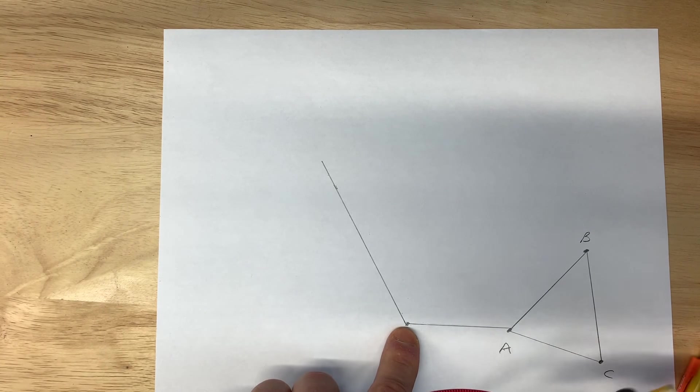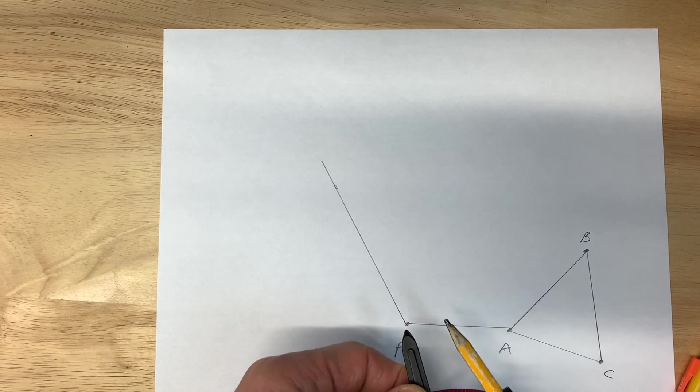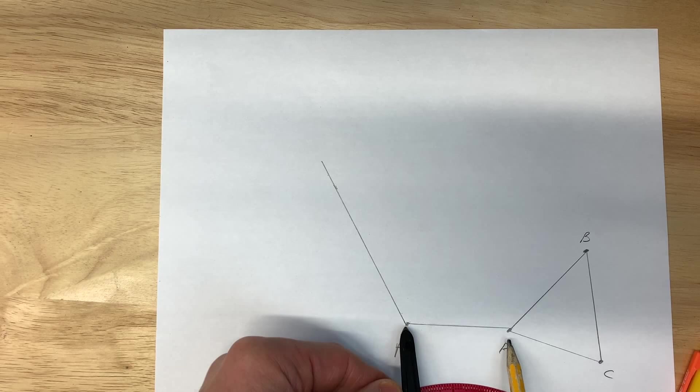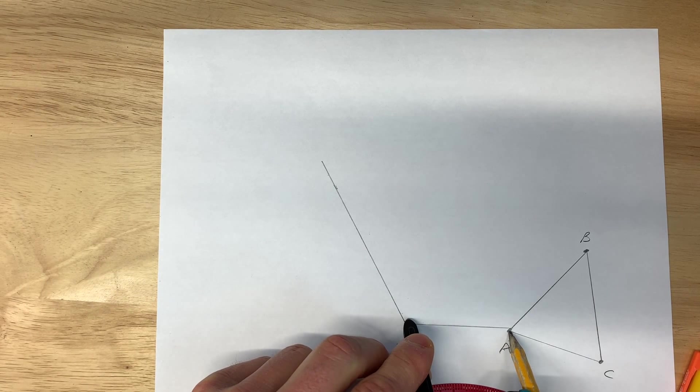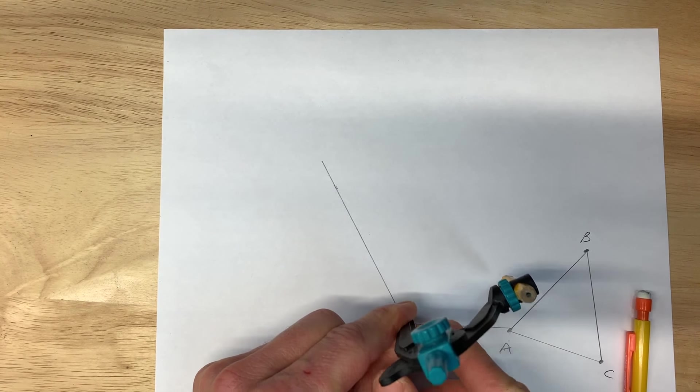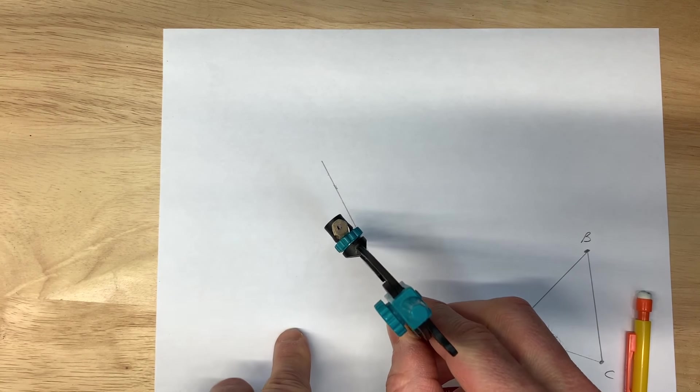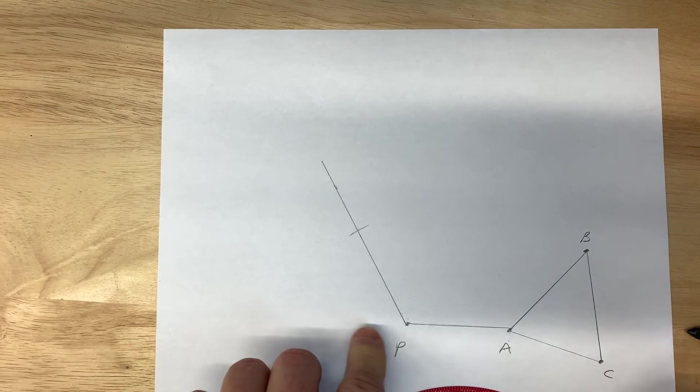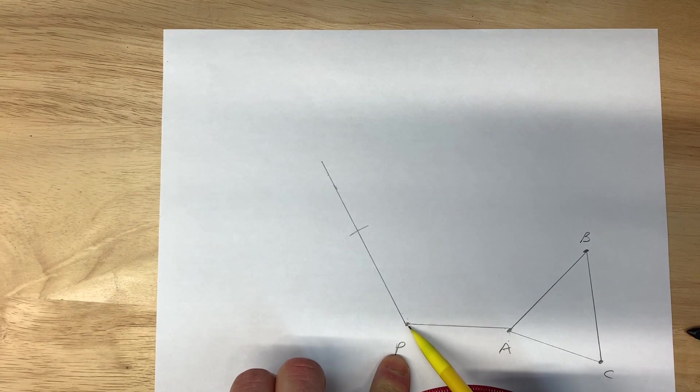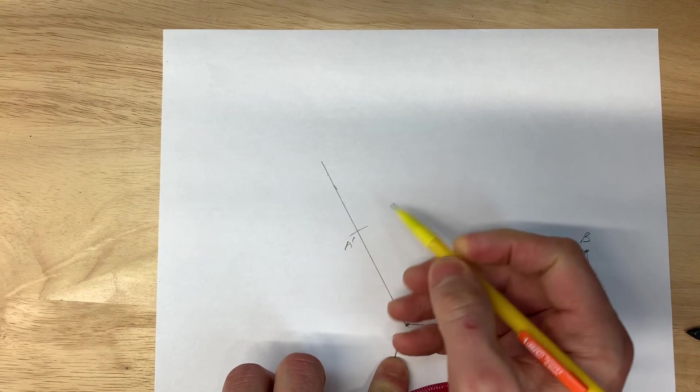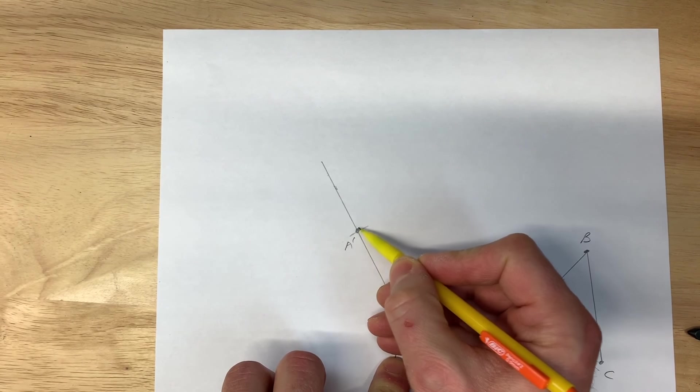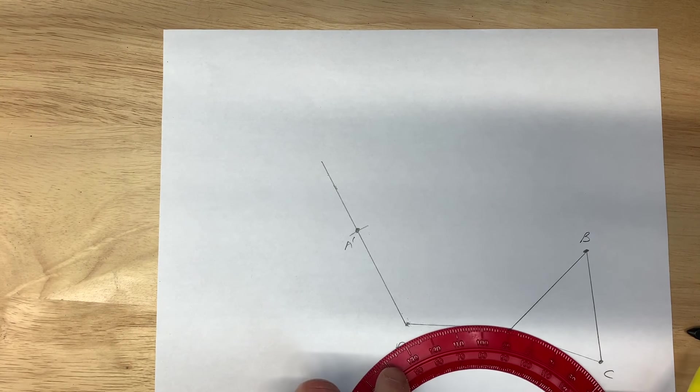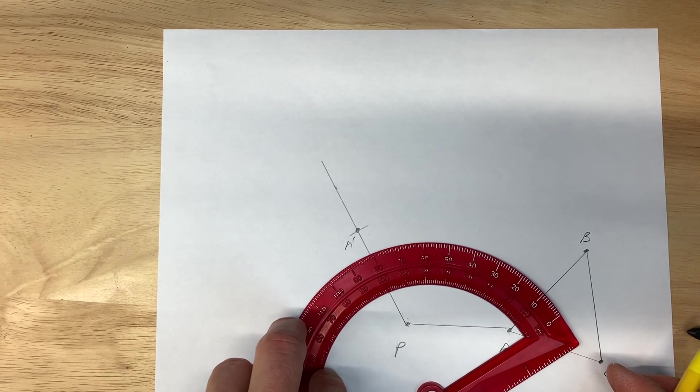Now you can use your compass. You want to open it up in such a way that it reaches from the center of rotation point P to this vertex A. Then you can rotate that along that 120 degree line. Now you can see that the distance from P to A is going to be the same as the distance from P to A prime. We're going to repeat that process with B and C and then connect all those points together to get our new figure.